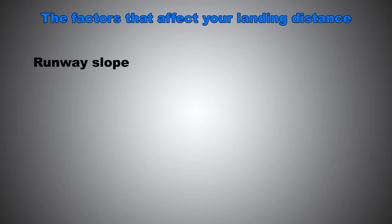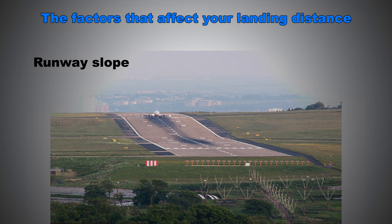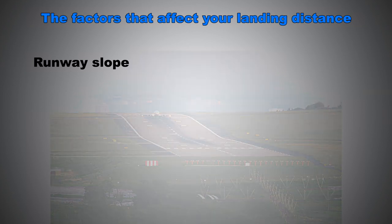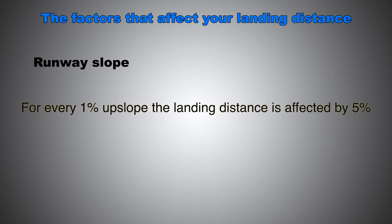Now, runway slope. This one is straightforward. Up slope will help the airplane decelerate, thus reducing the landing distance, and the down slope will increase the landing distance for obvious reasons. For every 1% up slope, the landing distance is affected by 5%. Keep this one in mind.